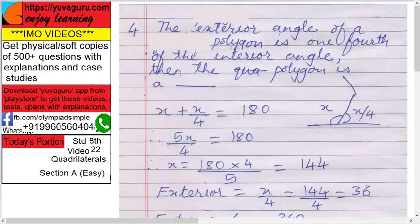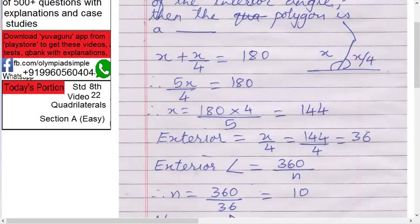What we want is number of sides. What is the formula for number of sides? We had seen it earlier. 360 upon exterior angle. So that's why we have to find exterior angle now. So 180 minus 144 is 36 degrees. So exterior equals to 36. You can solve it this way also. So x upon four, that is 144 by 4, or 180 minus 144. It's one and the same. So exterior angle equals to 36 degrees.